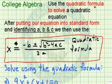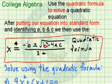In this lesson, we're going to use the quadratic formula to solve a quadratic equation. After we put our equation in standard form and identify the values of a, b, and c, then we use the quadratic formula: negative b plus or minus the square root of b squared minus 4ac, all over 2a. It's important that you memorize this formula.